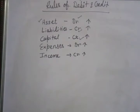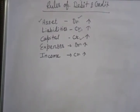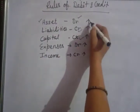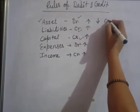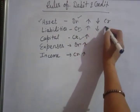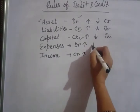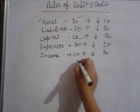If all these things increase, you write on their respective sides — that is where you write their balances. This is the reverse for decreases. If assets decrease, write on credit side. If liability decreases, write on debit side. If capital decreases, write on debit side. If expenses decrease, write on credit side. If income decreases, write on debit side.